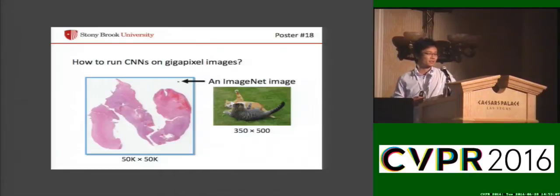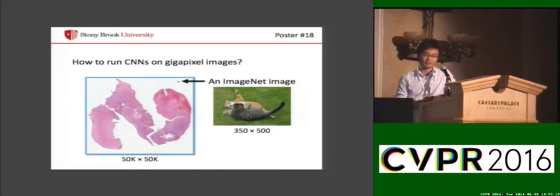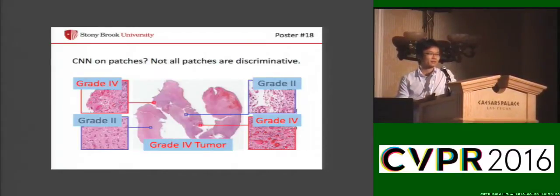The typical resolution of these images is like 50K by 50K. For size comparison, I put an ImageNet image in a corner. Because these images are very large, you cannot run CNNs directly. Pathologists or doctors will examine very high resolution patches, so maybe we can do a similar thing — we can run patch CNNs on these images.